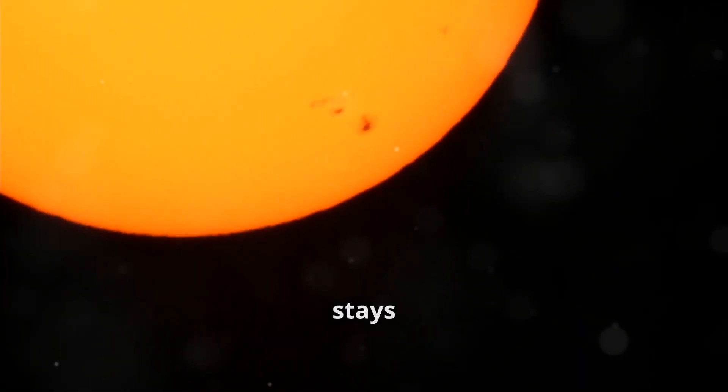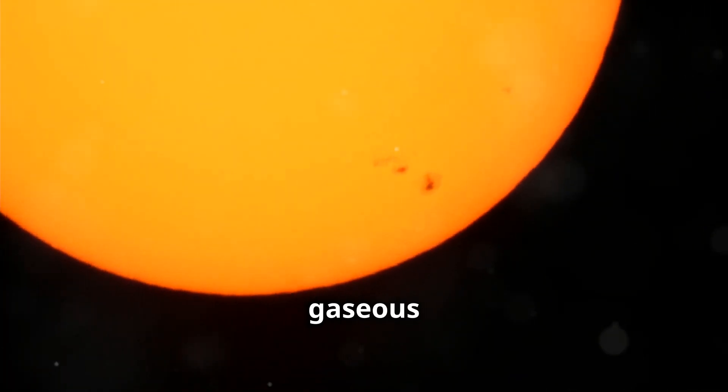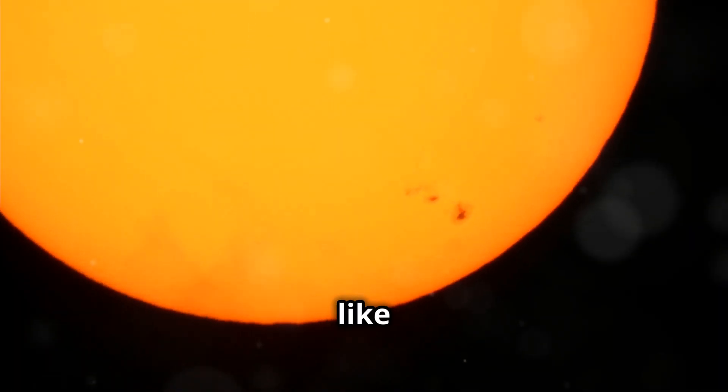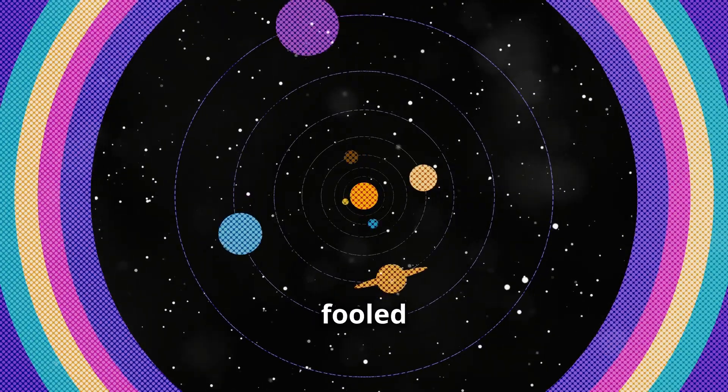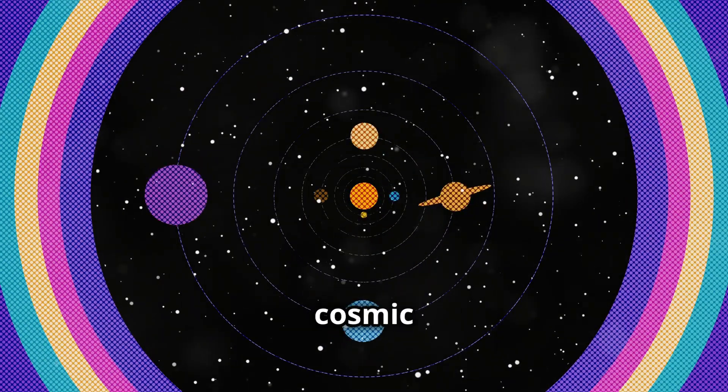Mercury, that little planet that stays close to the sun, may even seem insignificant next to the gaseous giants of our solar system, like Jupiter. But don't be fooled. Even the smallest of planets has its important role in this cosmic dance.